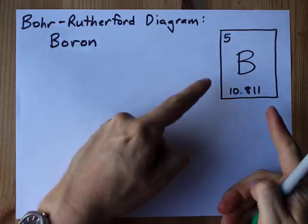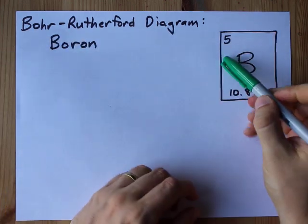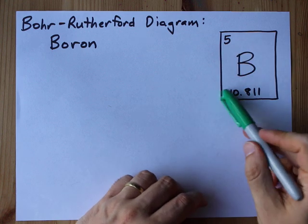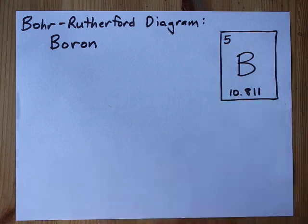But nonetheless, the element symbol from the periodic table is here. The atomic number is 5, and the atomic mass is 10.8.